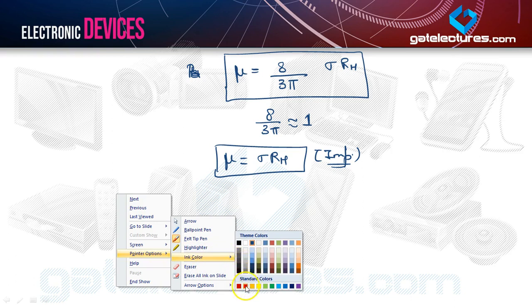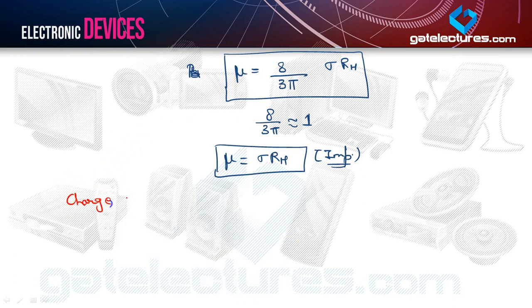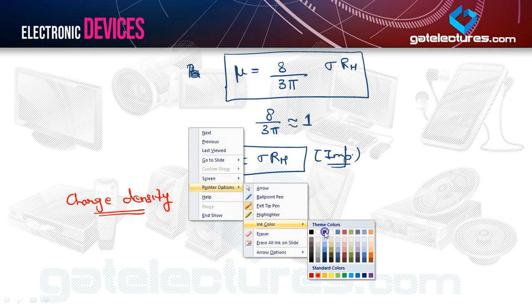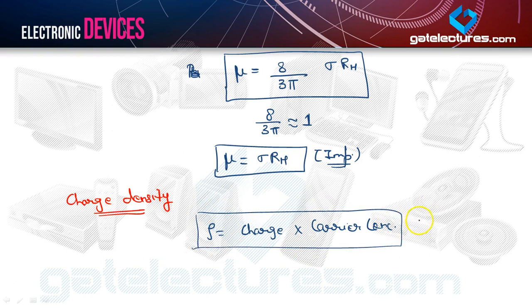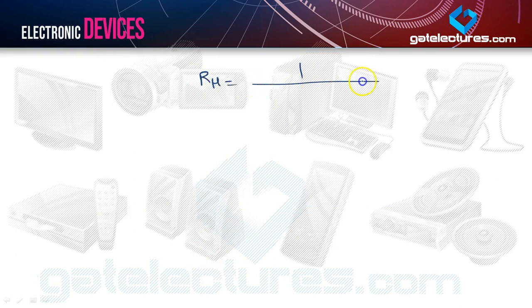Charge density is defined as charge multiplied by carrier concentration, with units of coulombs per meter cubed. The Hall coefficient RH equals one divided by the charge times carrier concentration. RH will be negative for metals and N-type semiconductors, because electrons are the majority carriers, and positive for P-type semiconductors where holes are the majority carriers.